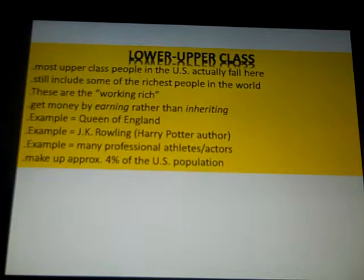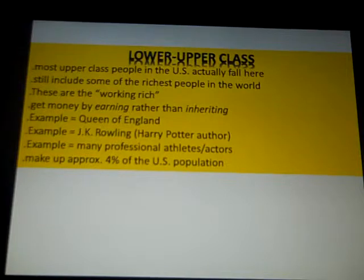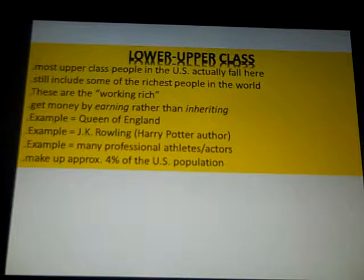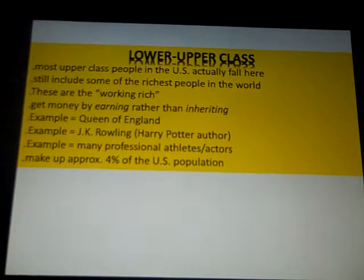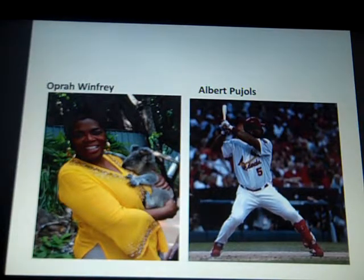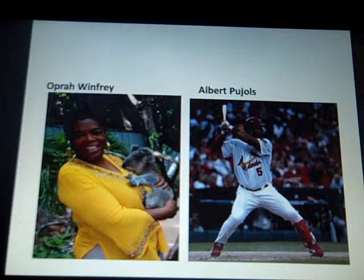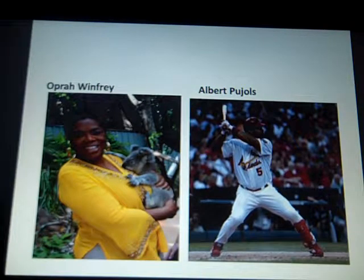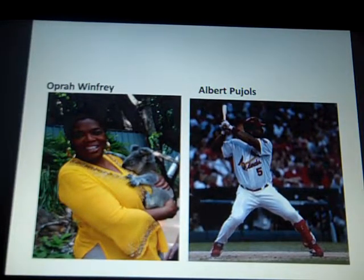J.K. Rowling, for example, the author of the Harry Potter books, would fall here. Most professional athletes and actors would fall within the lower-upper class. They make up approximately 4% of the U.S. population. Oprah Winfrey is a good example — she started off from the lower class in Chicago, Illinois, and through her television program, investing, etc., has amassed a fortune and is one of the richest people in the United States. But she worked for that; she wasn't born into it.